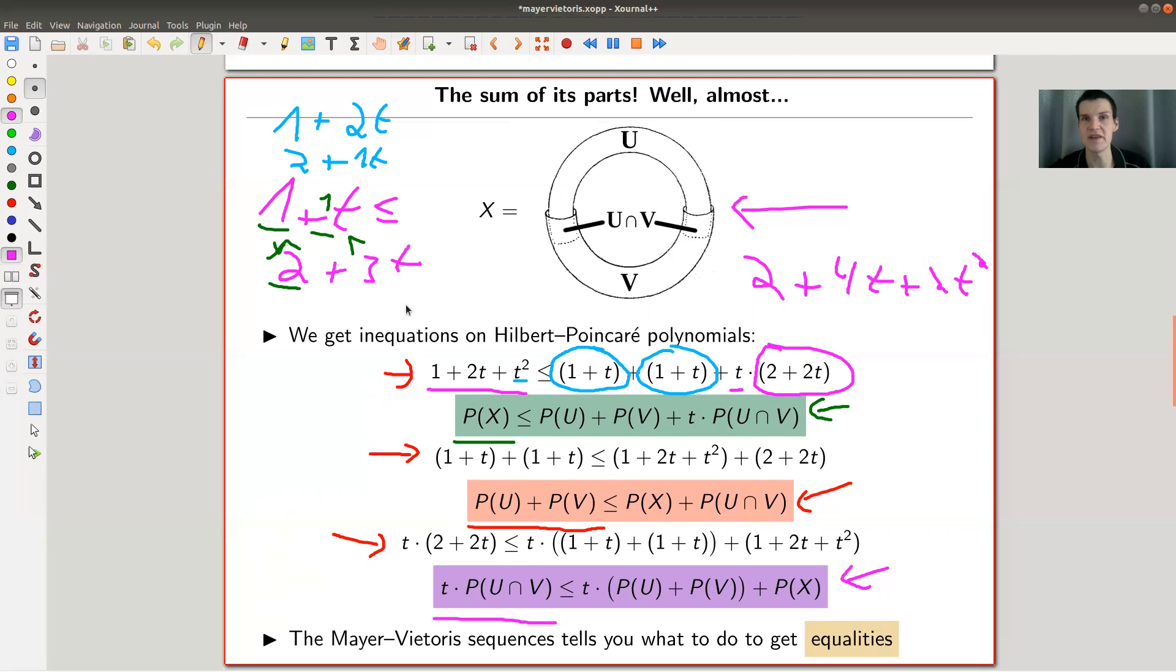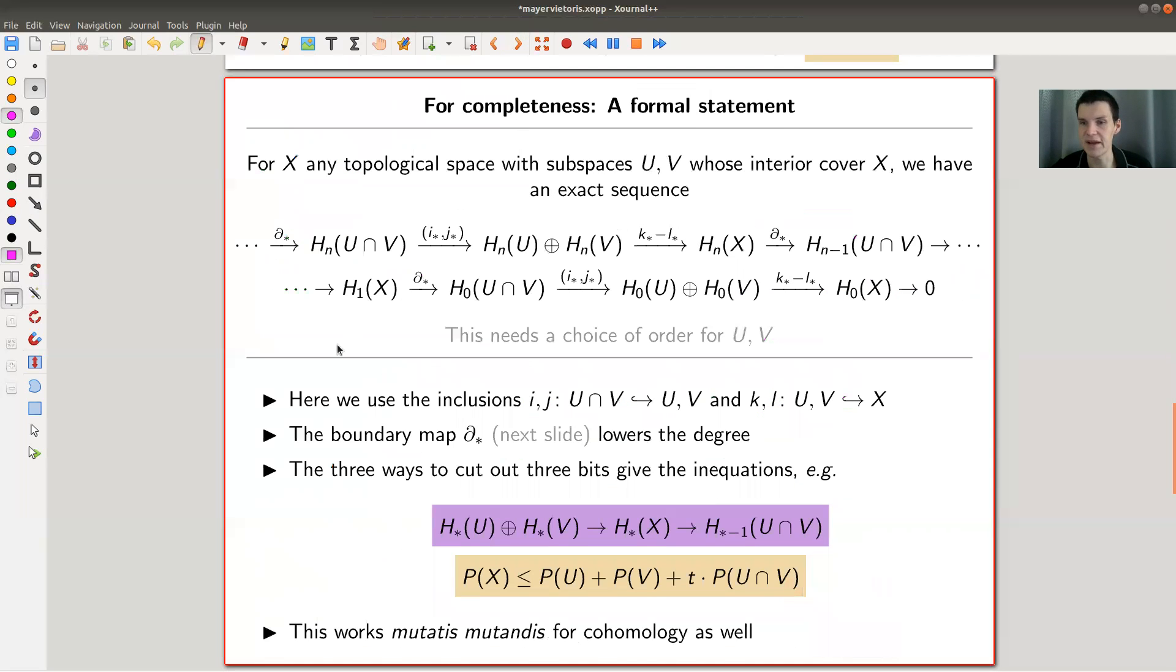So let's have a look at the formal statement, as you would find it roughly from the 50s onwards, where the notion of exact sequence came up. For any topological space, you can play this game with subspaces U and V. It's really this idea that you have the sequence with successive terms. And here is your degree shift, because this one jumps down from n to n-1. The boundary map basically uses induced maps from the inclusions, and then you get the sequence of homology. And the point is, this is exact.